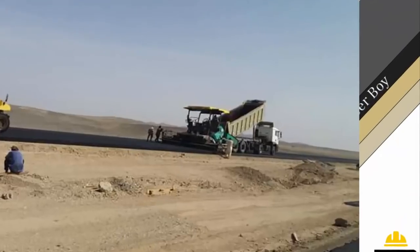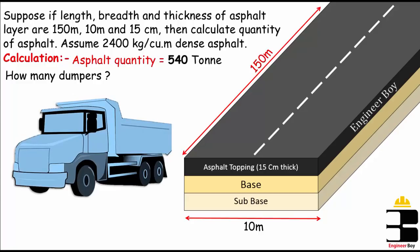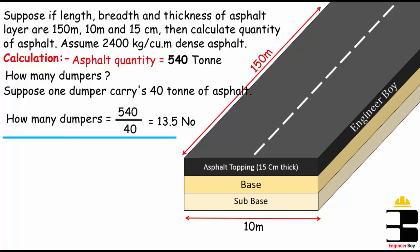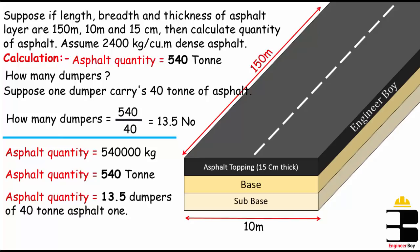Now, how many dumpers are required to construct this asphalt layer? This depends on the type and size of the dumper. Let's suppose one dumper carries 40 tons of asphalt. We divide the total quantity of 540 tons by the capacity of one dumper, which is 40, to get 13.5 dumpers. So the asphalt quantity is 540,000 kg, or 540 tons, requiring 13.5 dumpers — and that's how we calculate the asphalt quantity for a layer.